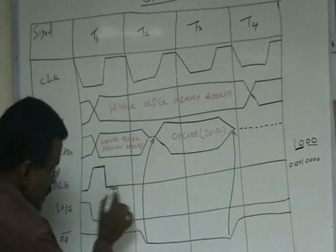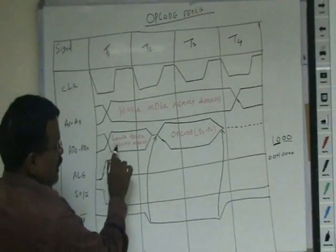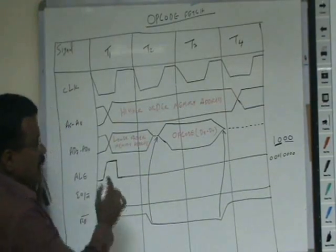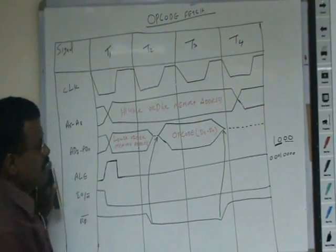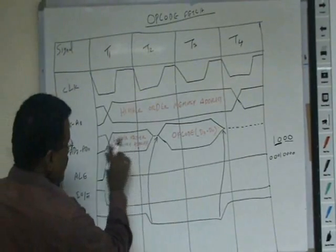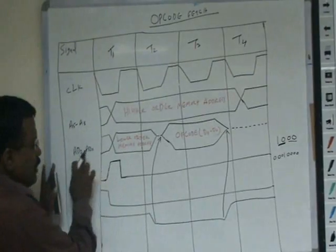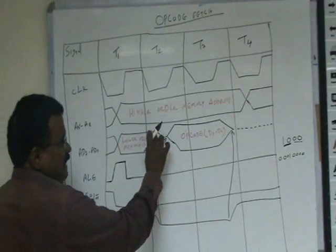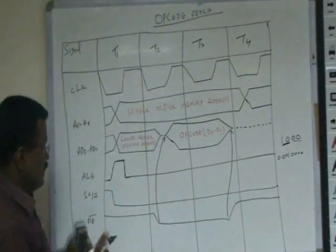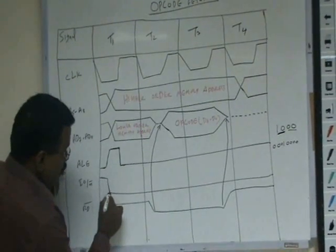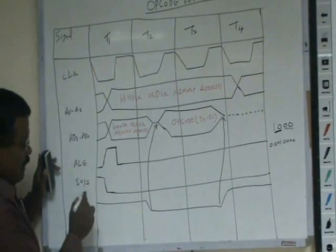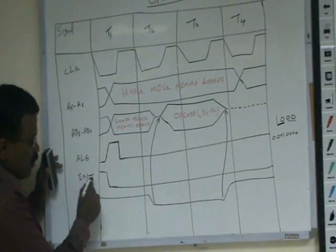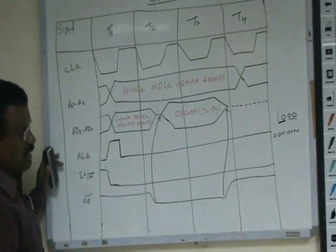Once the ALE signal generates a pulse, immediately the address available on AD0 to AD7 is latched. By using a latch, they store the lower-order address bus. So the lower-order memory address is available for some time on AD0 to AD7. Once ALE generates a pulse, this is latched and available after the latch. Now, the IO bar M bar signal should be low during the first T-state itself, because this is a memory-related operation — the instruction is stored in memory. So in order to fetch an instruction, IO bar M bar should be low during the first T-state.